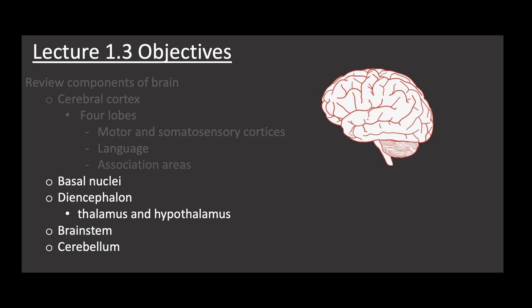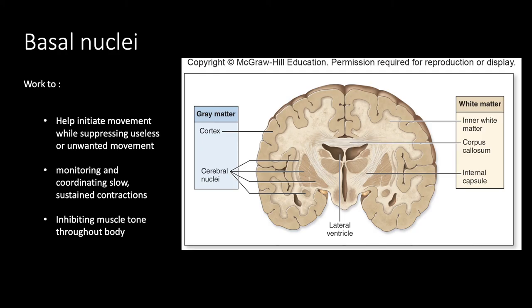That brings us to the basal nuclei — clusterings of cell bodies deep within the brain. There is also gray matter deep to the cortex, concentrated in nuclei — a collection of cell bodies deep within the cerebral white matter. Similar to ganglia in the PNS, nuclei in the CNS are functioning groups of neuron cell bodies. They help initiate movement while suppressing useless or unwanted movements, monitor and coordinate slow sustained contractions such as holding a bucket out in front of you, and inhibit muscle tone throughout the body.